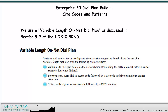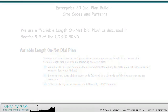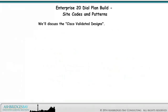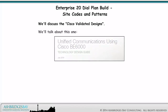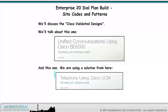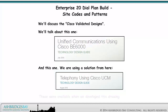Off-net calls require an access code followed by a PSTN number. We'll discuss the Cisco Validated Designs — the Cisco BE6000 CVD and the Telephony Using Cisco UCM CVD. We are using a solution from here; these were available when we developed this drawing.